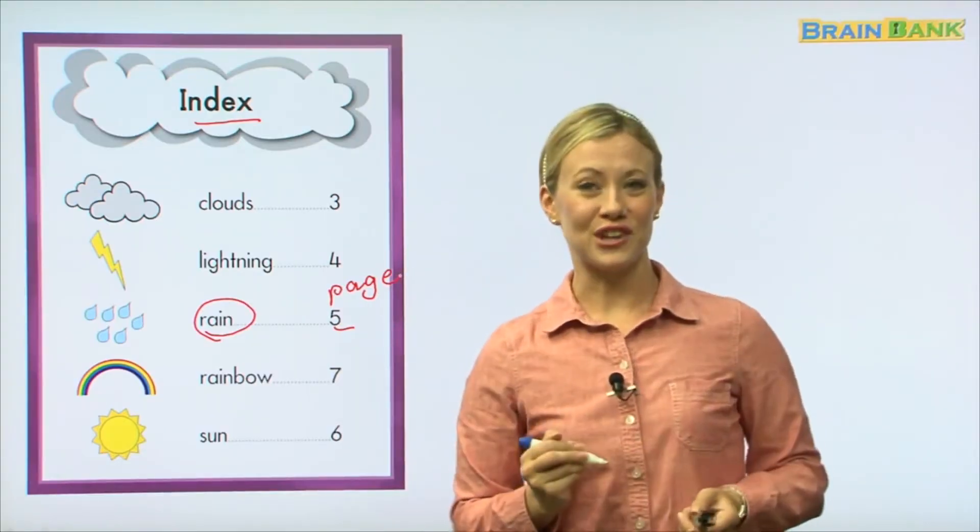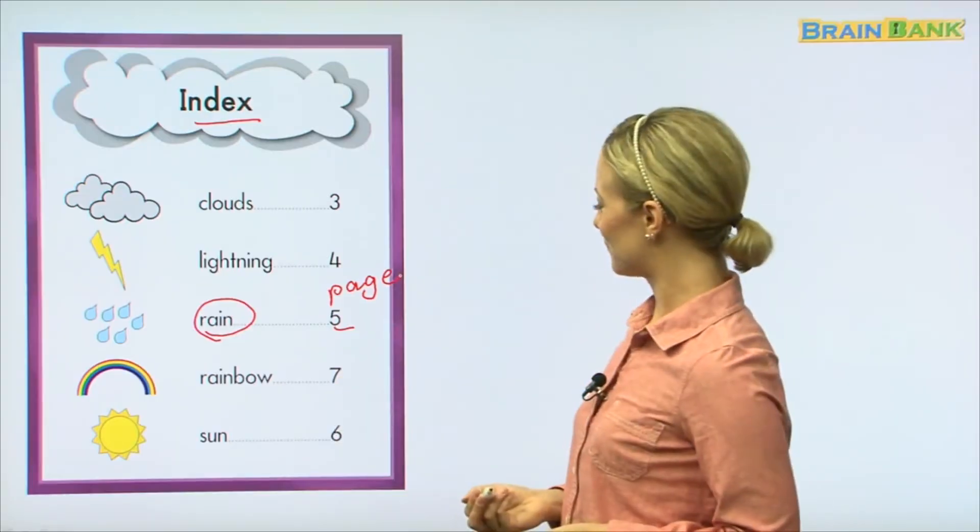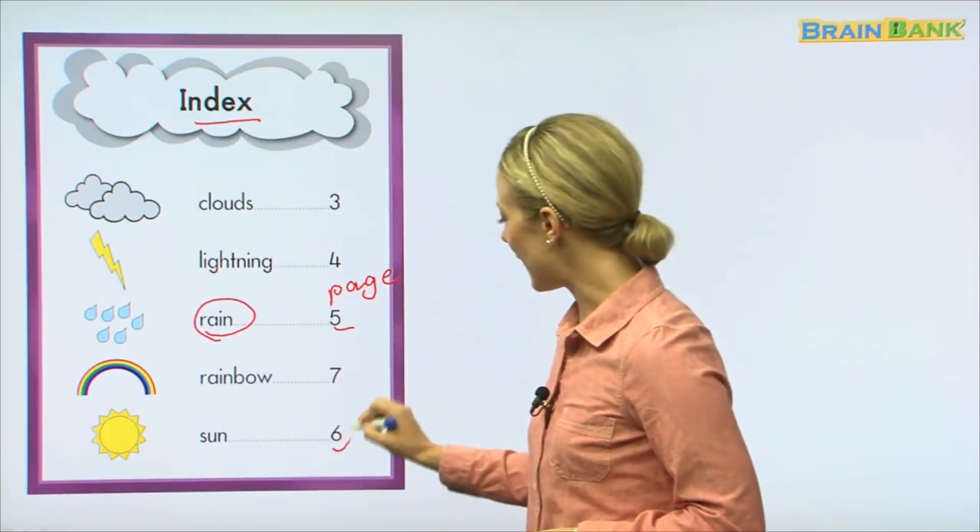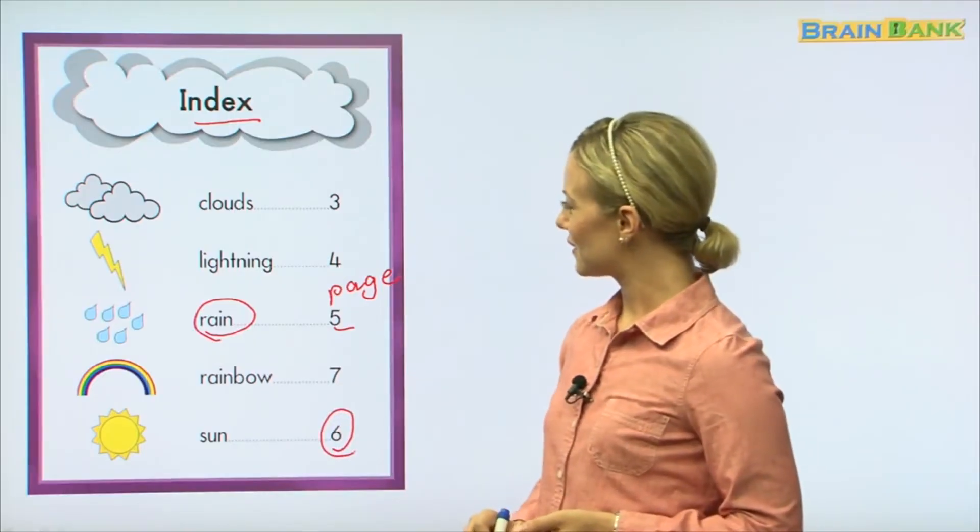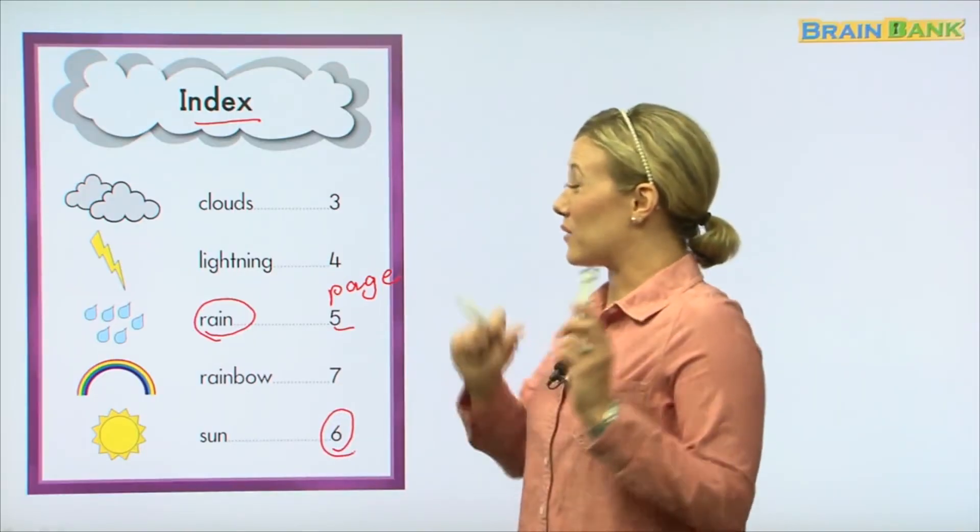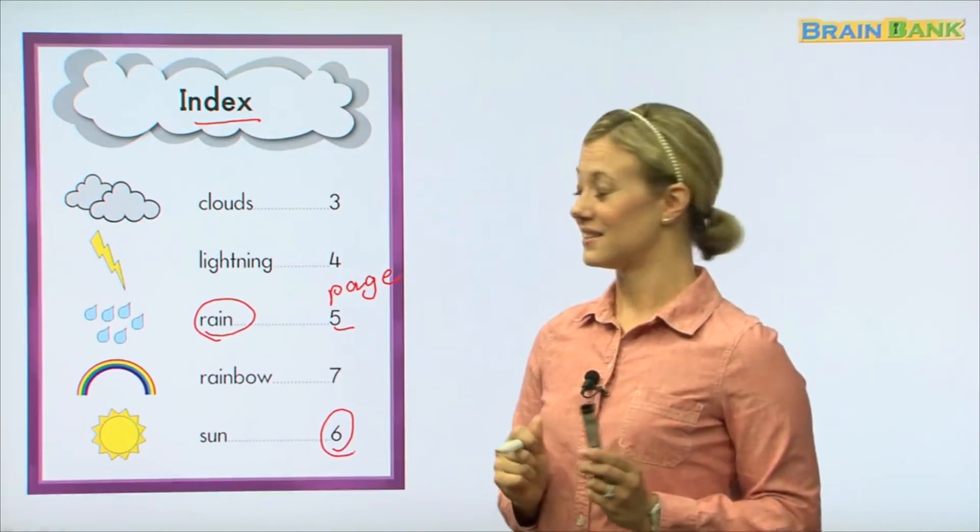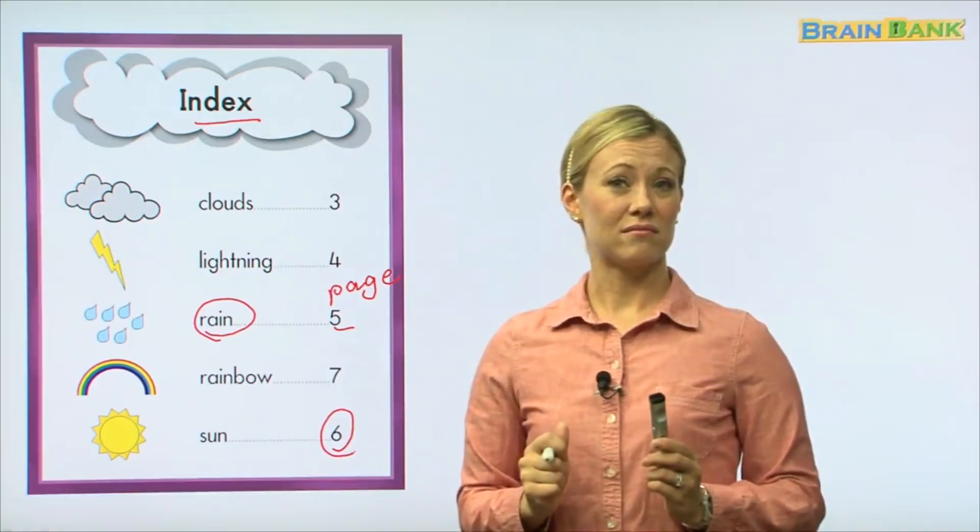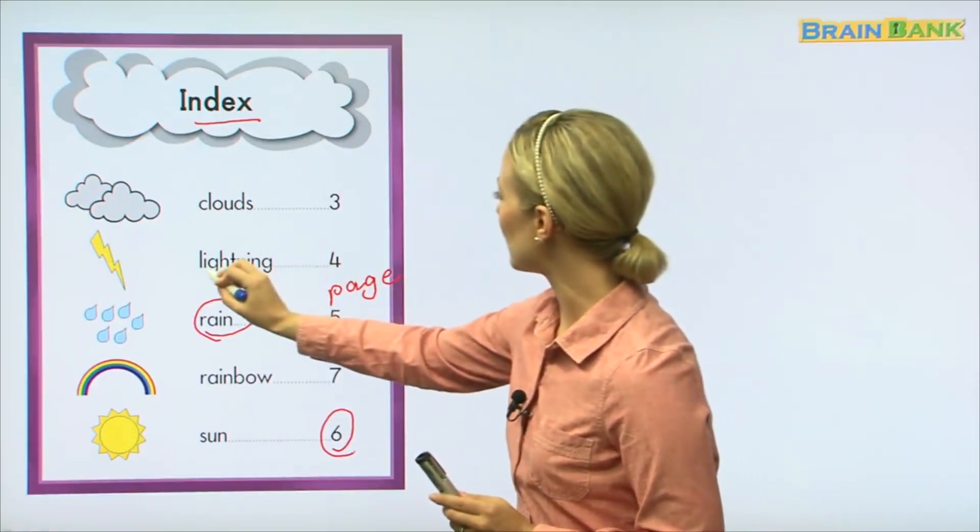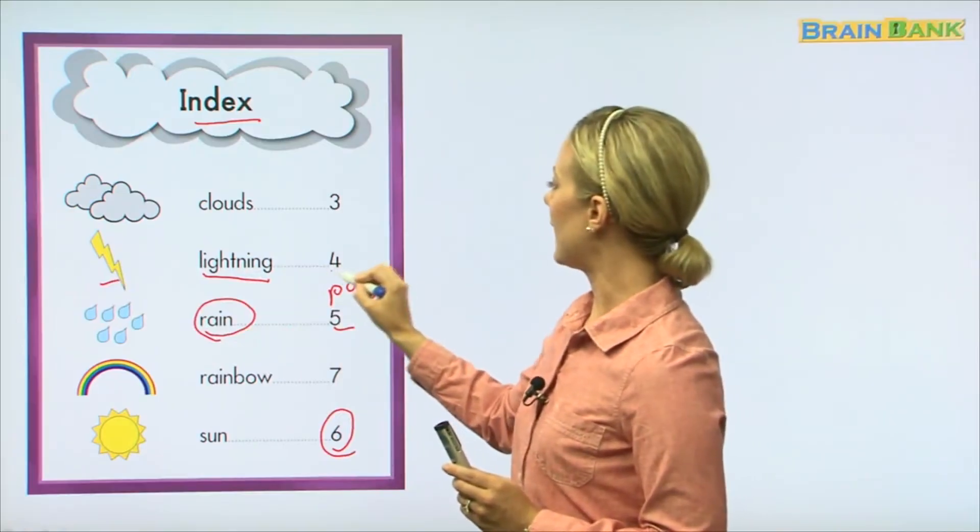Now what if I want to see beautiful sunshine and read about the sun? What page should I go to? Yes, page six, good job. But what if I want to read about scary lightning and I want to see some pictures of that? Page three? No, right here. Lightning, and here's the picture, page four. That's pretty cool, huh? It helps us be very organized and find what we're looking for easily.